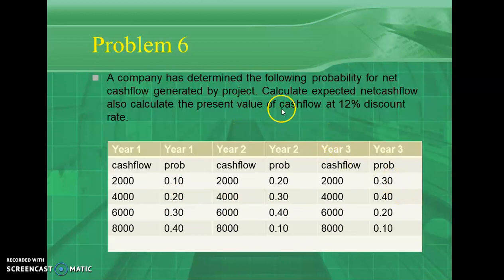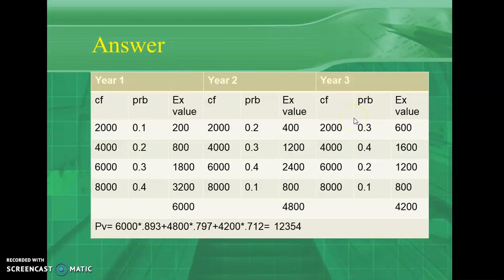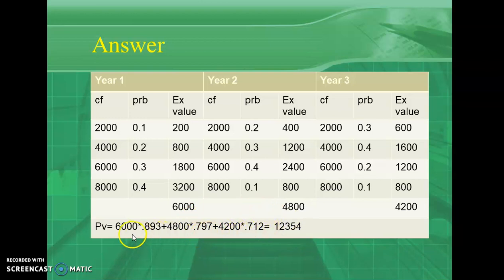Now check the question — find the present value of cash flows at a 12% discount rate. For Year 1 at 12%, the present value factor is 0.893. For Year 2 it is 0.797, and for Year 3 it is 0.712. Multiply the expected cash flows by their respective PV factors and find the sum. You will get 12,354 — that is the present value of the cash flows.